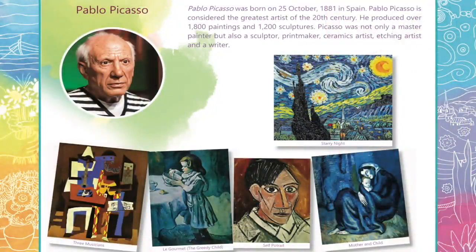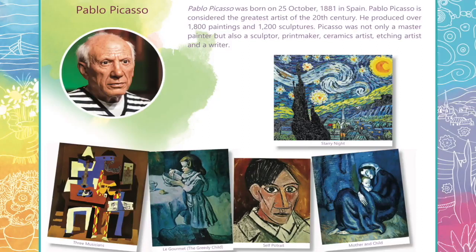Pablo Picasso was born on 25th October 1881 in Spain. Pablo Picasso is considered the greatest artist of the 20th century. He produced over 1800 paintings and 1200 sculptures. Picasso was not only a master painter but also a sculptor, printmaker, ceramic artist, etching artist and a writer.